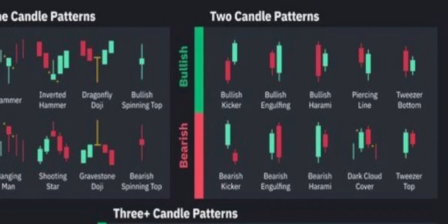Bullish kicker: it opened here, closed here, then opened up higher — almost like a gap up. Bullish engulfing: anytime you have a candle that is bigger than the candle before it, it's an engulfing candle. Bullish harami: the next candle doesn't cover the whole body — the red body is much bigger than the green body. Piercing line: price pushed all the way down, then pushed back up to at least halfway of the red candle body.